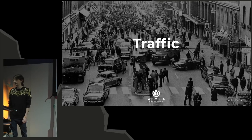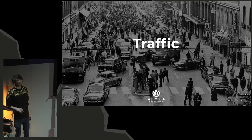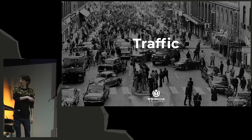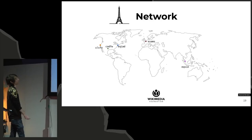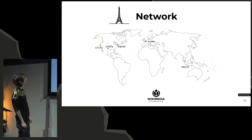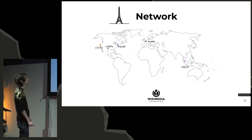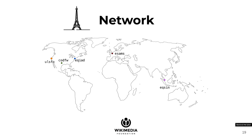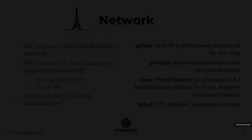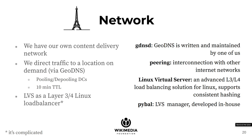Now for traffic. We have five caching layers — including points of presence in Singapore, San Francisco, Amsterdam, Chicago, and the primary data center. We have our own content delivery network with routing done by GeoDNS, written and maintained by one of our traffic team members. We can pool and depool data centers with a 10-minute TTL propagation time. We use LVS as a transport layer load balancer, and because we grew so large we wrote our own load balancer management system called PyBall.